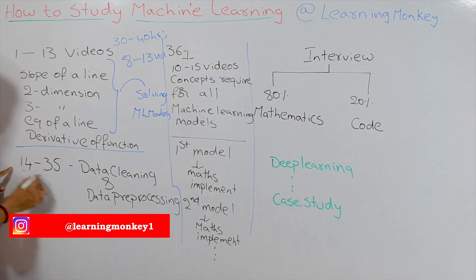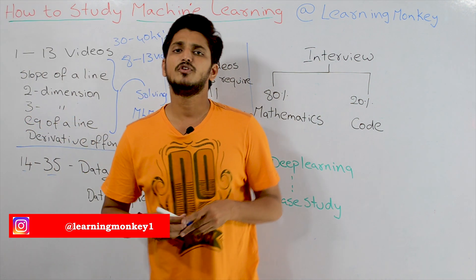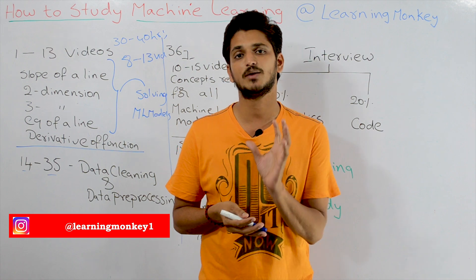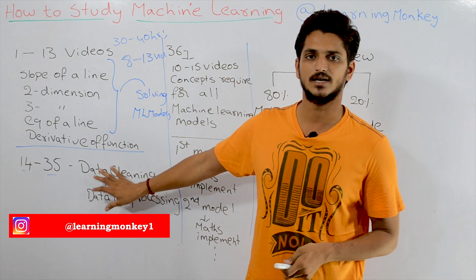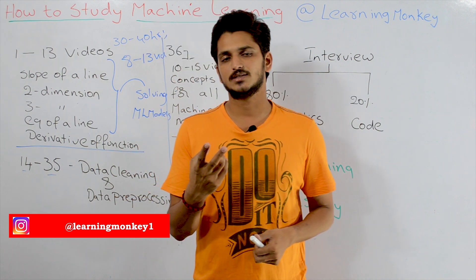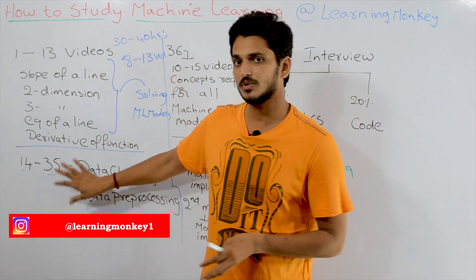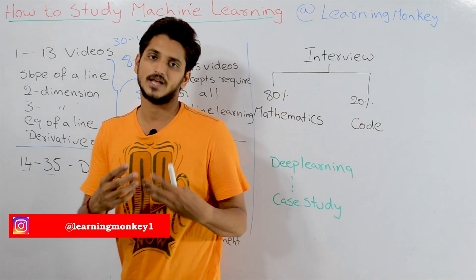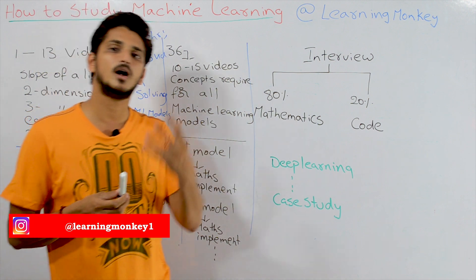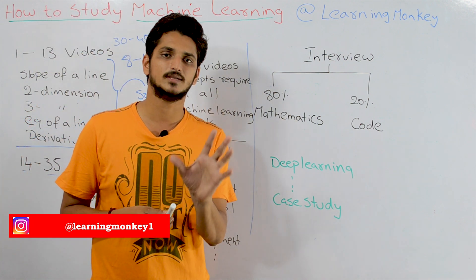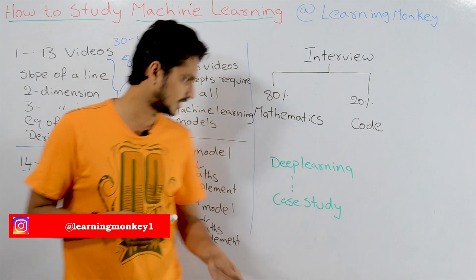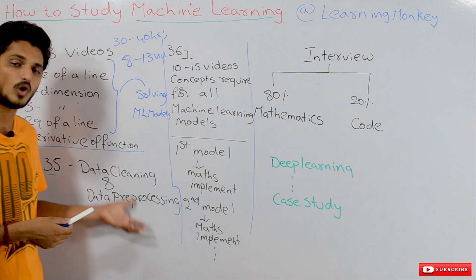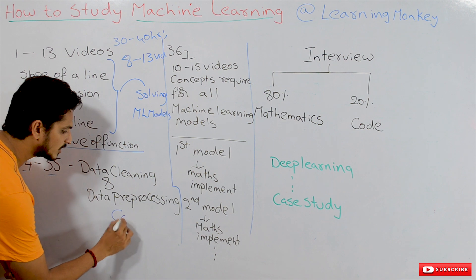From the 14th to the 35th video, before going into machine learning models, we first do data cleaning and data pre-processing on our datasets. We take two real-time datasets, apply data cleaning and pre-processing, and use those two datasets across all our machine learning models. The concepts here are easy to understand, but you have to concentrate on the coding part.